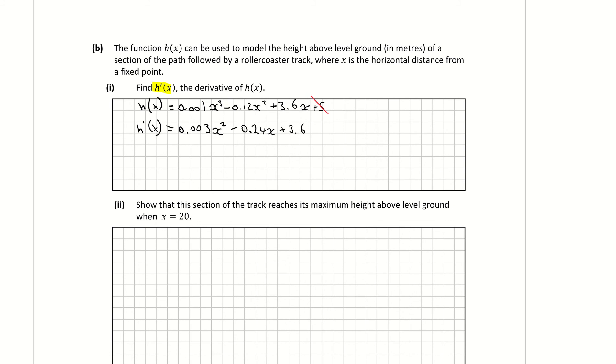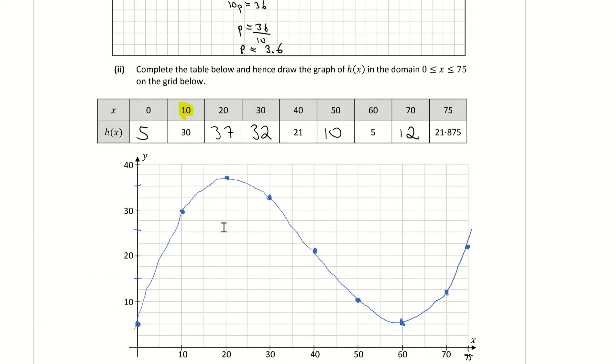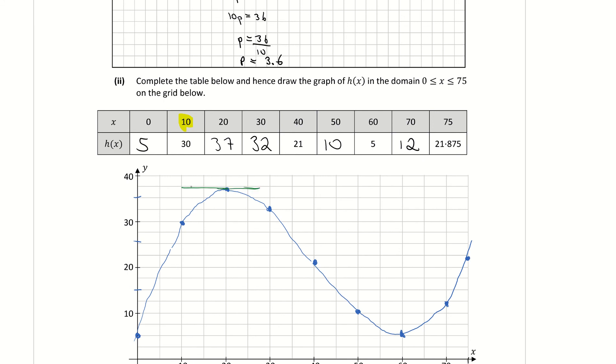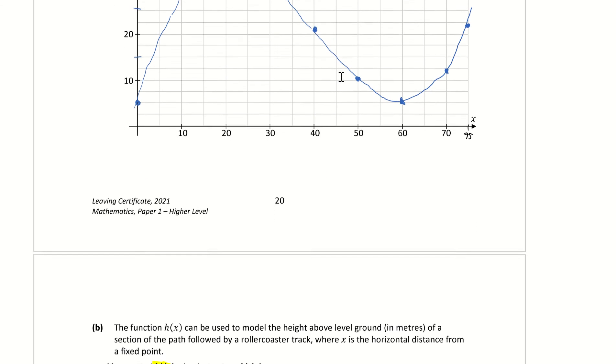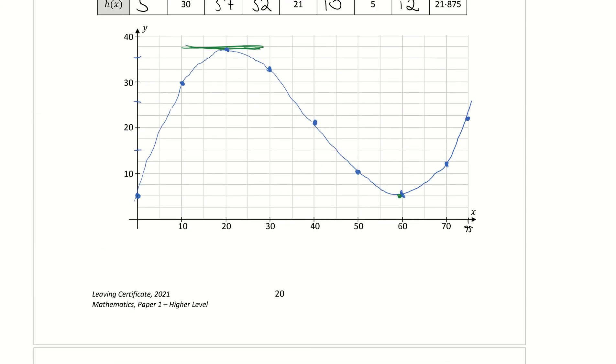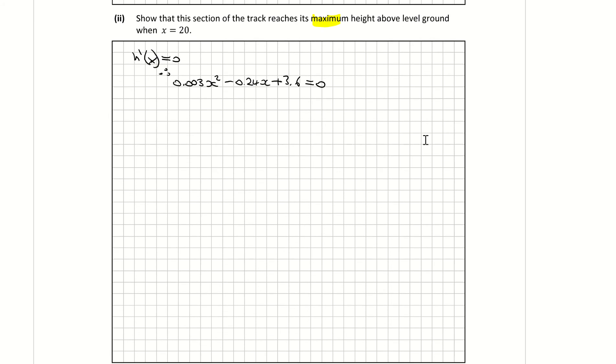Part 2: show that this section of track reaches its maximum height above level ground when x is equal to 20. So again, this is like your max and mins when you're doing your calculus. So that's when you differentiate and let it equal to 0. So you're letting your derivative equal to 0, basically here. So therefore, my derivative is 0.003 x squared minus 0.24 x plus 3.6 is equal to 0. And the reason we're letting it equal to 0 is that the slope at the maximum turning point on my curve is here, and the slope is always flat at a turning point.